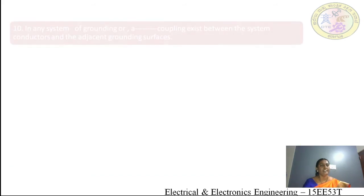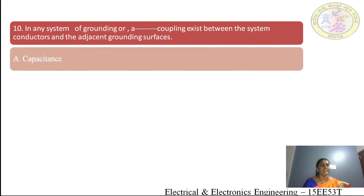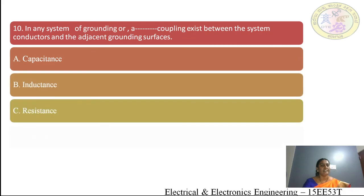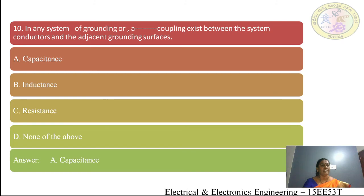Tenth question: in any system of grounding, what type of coupling exists between the system of conductors and the adjacent grounding surfaces? — (A) capacitance, (B) inductance, (C) resistance, (D) none of the above. The answer is capacitance. Capacitance coupling exists between the conductors and the adjacent grounding surfaces.